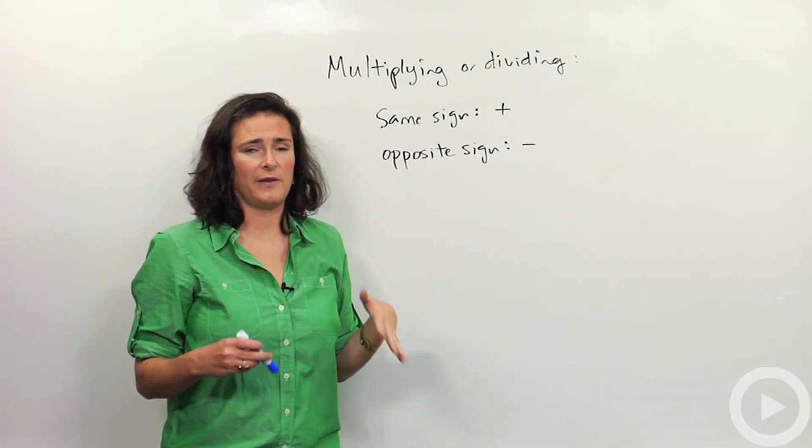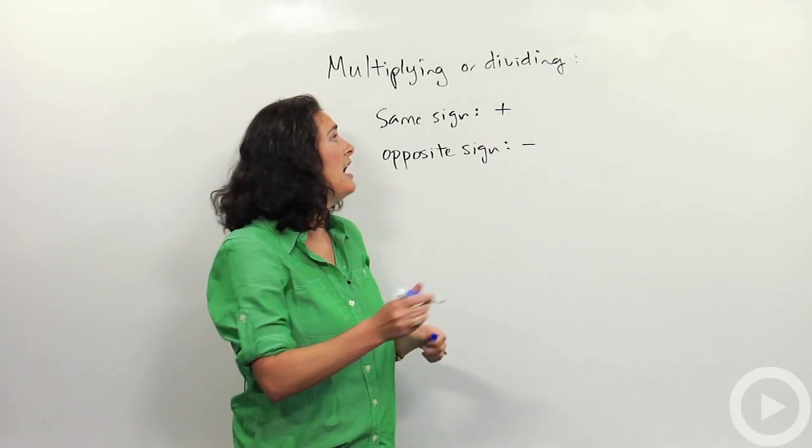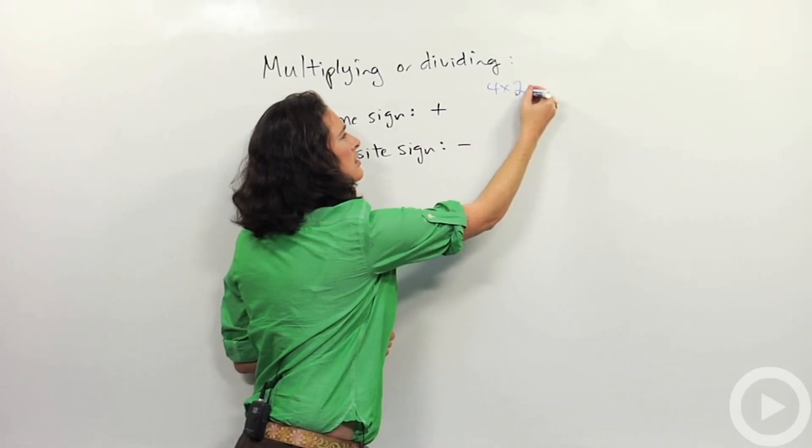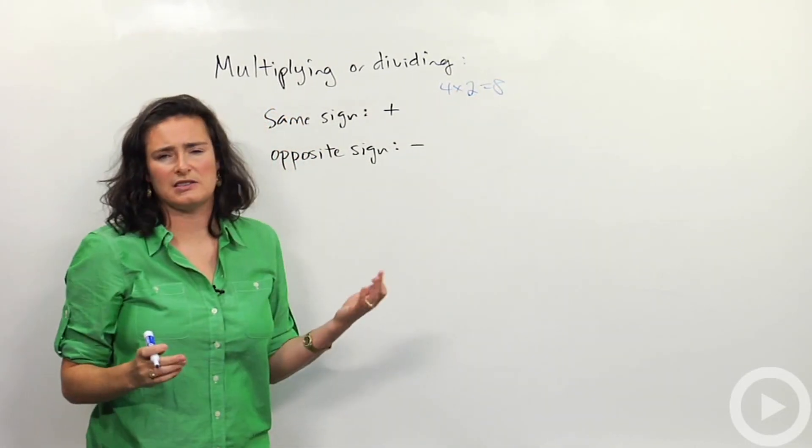I'm going to put a couple problems up here on the board to illustrate what I'm talking about. If I do 4 times 2, both positive, my answer is positive. That's pretty straightforward.